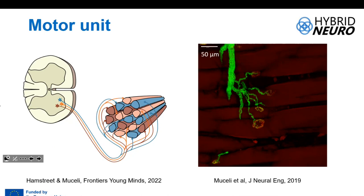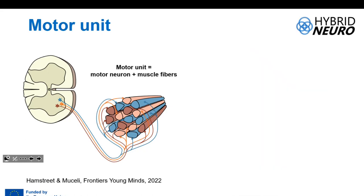As I mentioned before, one motor neuron innervates multiple fibers, and these fibers innervated by multiple motor neurons are intermingled. We usually use the word motor unit to indicate the set of a motor neuron and the fibers that are innervated by that motor neuron.